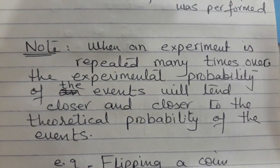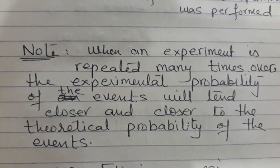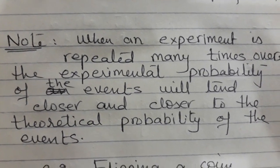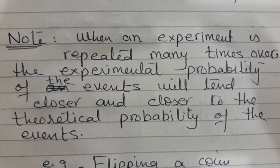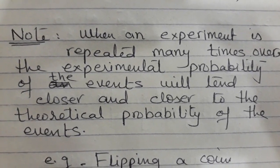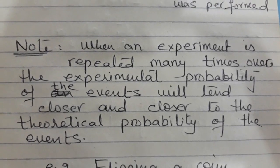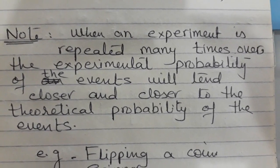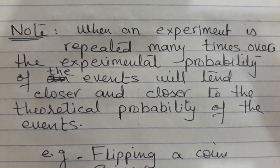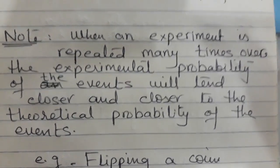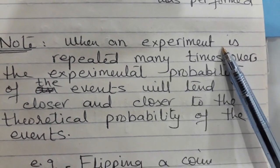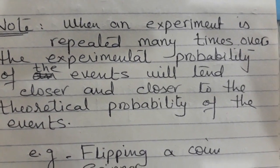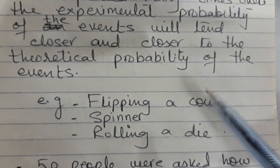When you perform an experiment a large number of times — say a hundred or two hundred — your experimental probability will approximately equal the theoretical probability. For example, if you throw a die ten times and count how many times you get a two, you may not get exactly 1/6. But if you throw it five hundred or a thousand times, as you increase the number of throws the probability will get closer and closer to 1/6. Remember: experimental probability for small values may differ from theoretical, but converges with large trials.